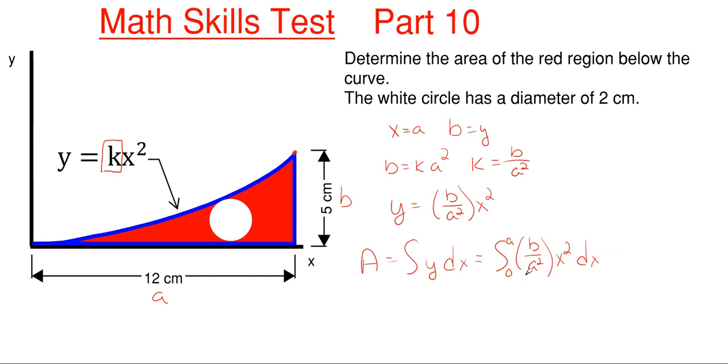So when I integrate this, it pops out to be the constant of b over a squared remains the same, and then x squared becomes one third times x to the power of 3, and of course that is going to be from 0 to a.